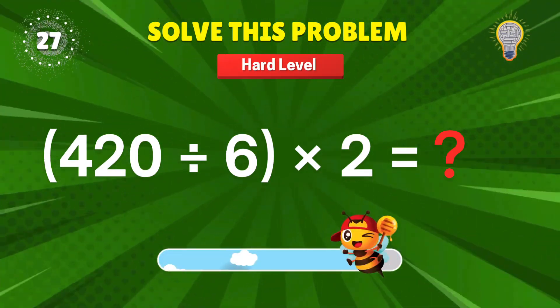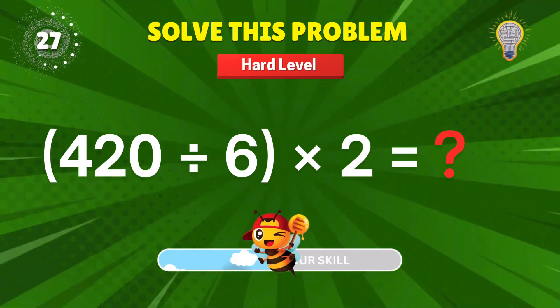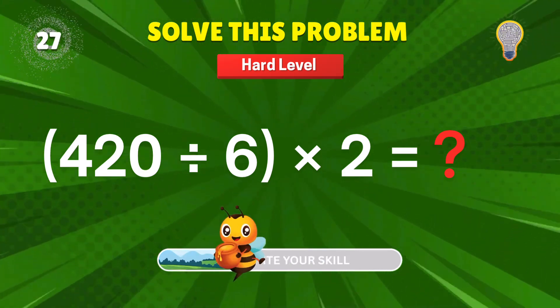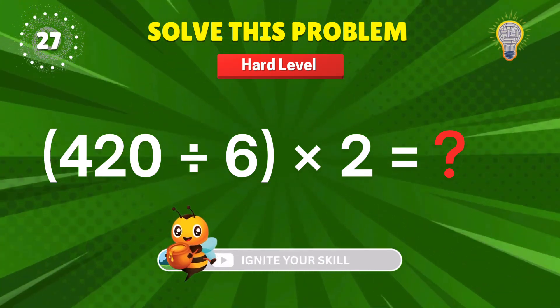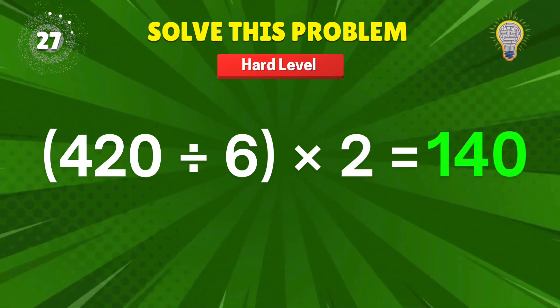420 divided by 6? Times 2? Double trouble. 140. Right on target. Plus 1.